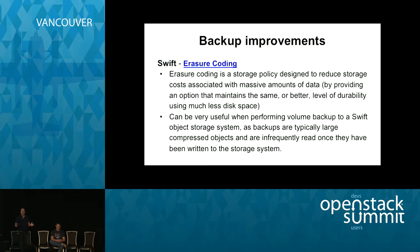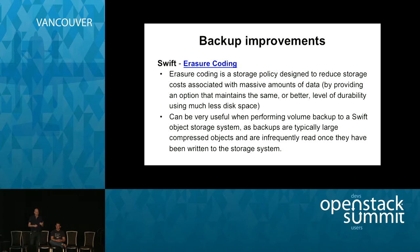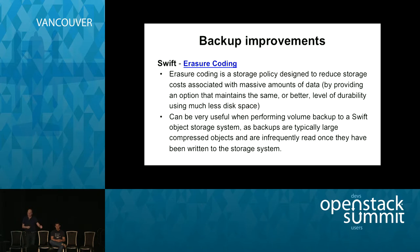In Swift, one of the biggest features landing in this release is erasure coding. Erasure coding is one of the storage policies — storage policies was a big feature from a release ago, and now we can leverage it. It allows us to reduce storage costs associated with massive amounts of data such as backups. It's useful when performing volume backup to Swift. However, this is a beta feature — don't use it in production yet as you may lose your data. But testing it will help get it mature enough.